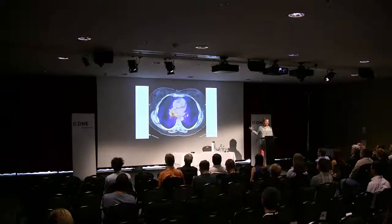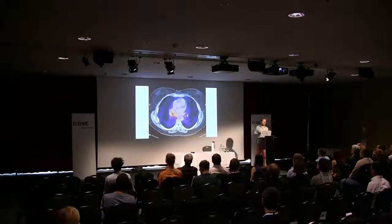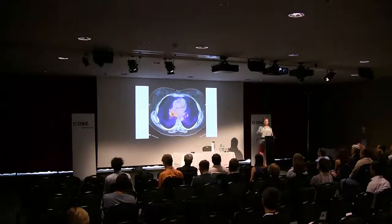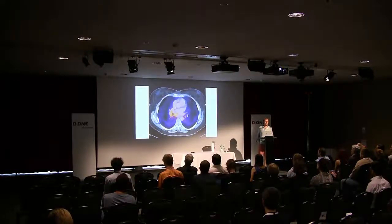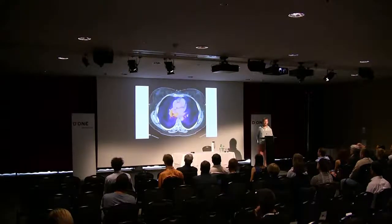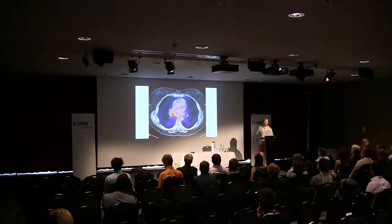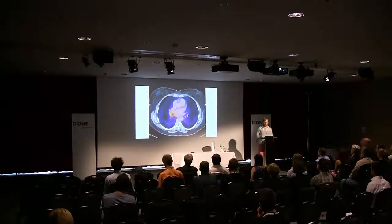This is called PET-CT, where you take a CT scan and get even more information out of it by adding a contrast agent that lights up where sugar is being used. This can give you a much better idea of not only what's going on at the physical structural level, but at the biological and chemical level as well.